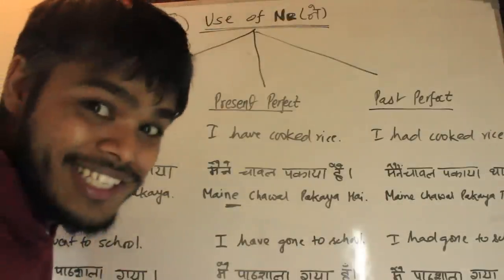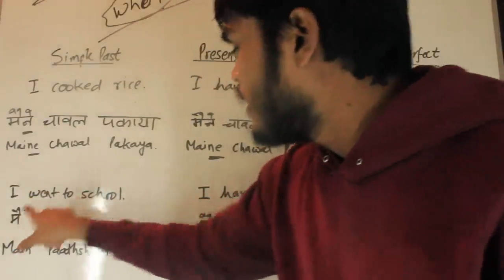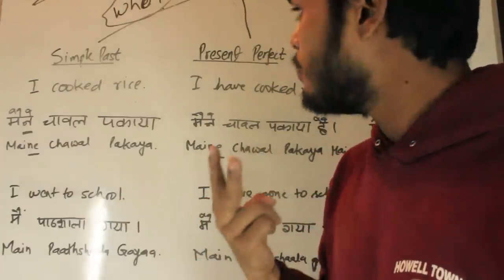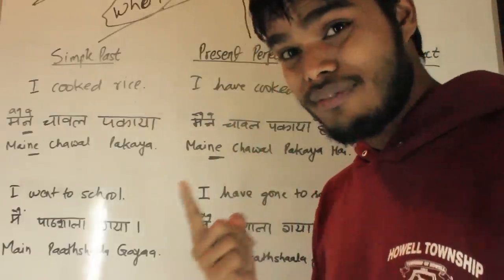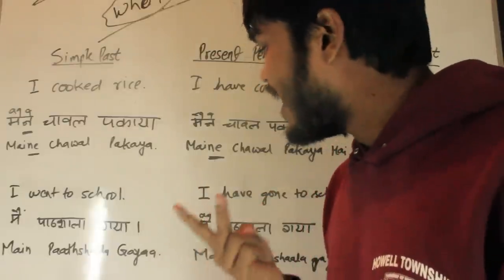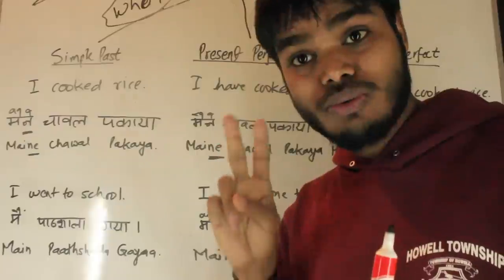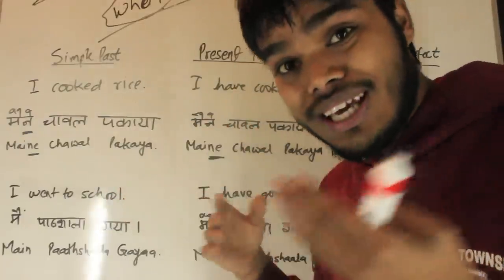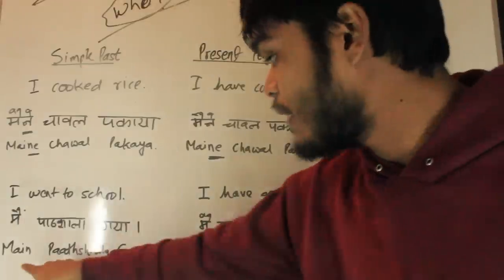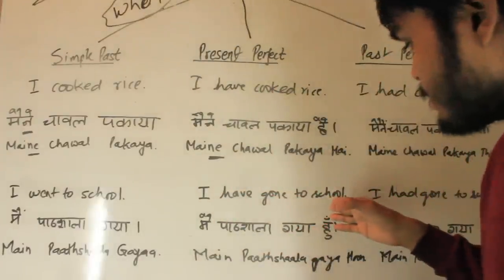Another example: 'I went to school.' Here I first need to decide whether 'go' (Jana in Hindi) is transitive or not. I ask 'what?' — do I have an answer? No. Then 'who?' — yes, I have the answer. But I didn't get the answer for 'what,' so I don't have both answers. Since the rule requires both answers, 'go' is an intransitive verb. So I will not use Ne here — it becomes 'main pathshala gaya' — I went to school.